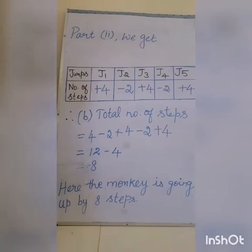The positive answer you get means the monkey is going up. This is the answer. Here the monkey is going up by 8 steps. This is the 8 steps the monkey has done. The positive sign refers to going up.